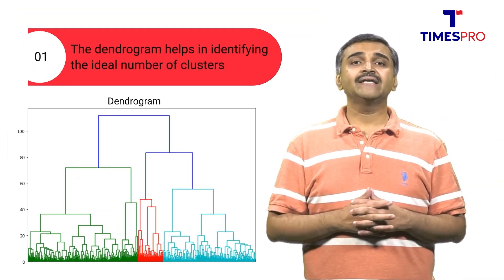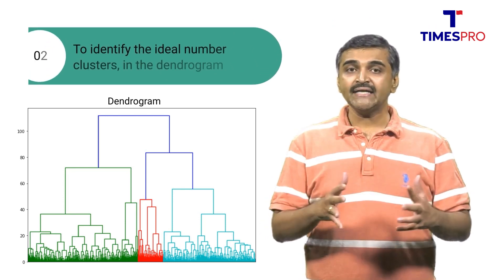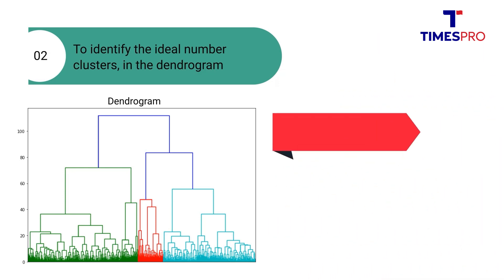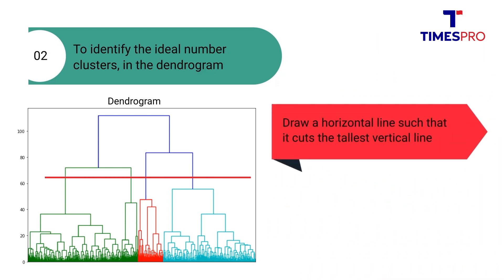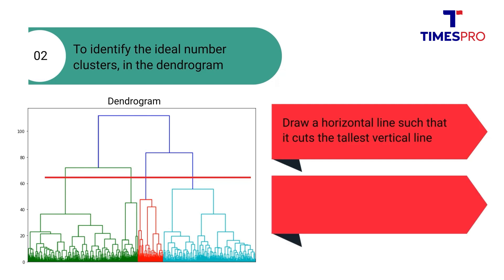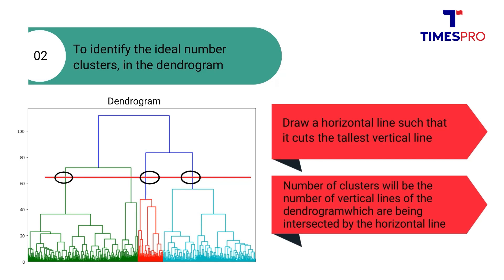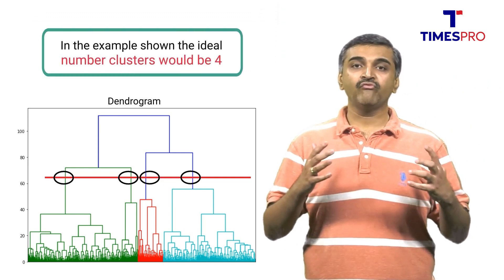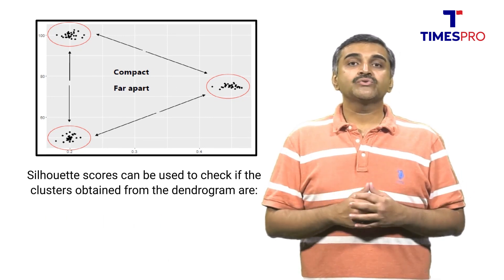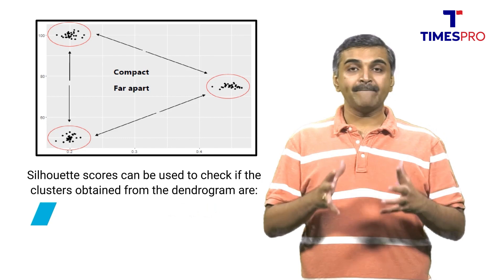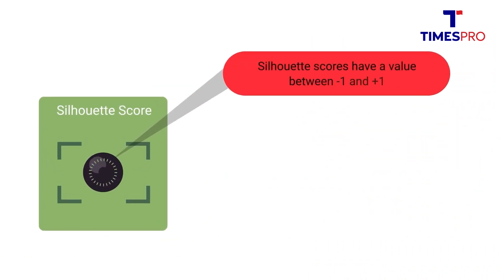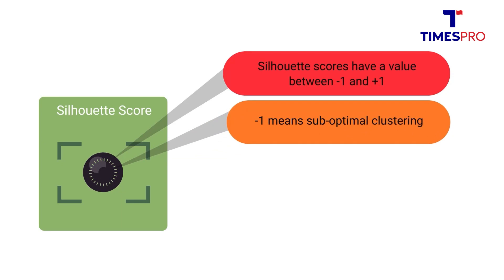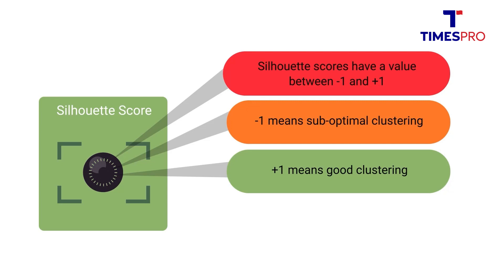The dendrogram helps in identifying the ideal number of clusters. To identify the ideal number, we draw a horizontal line such that it cuts the tallest vertical line. The number of clusters is the number of vertical lines of the dendrogram intersected by the horizontal line. In this case, the ideal number of clusters would be 4. Silhouette scores can also be used to check if the clusters are compact and well separated. Silhouette scores have a value between minus 1 and plus 1, where a value close to minus 1 means suboptimal clustering and a value close to plus 1 means good clustering.